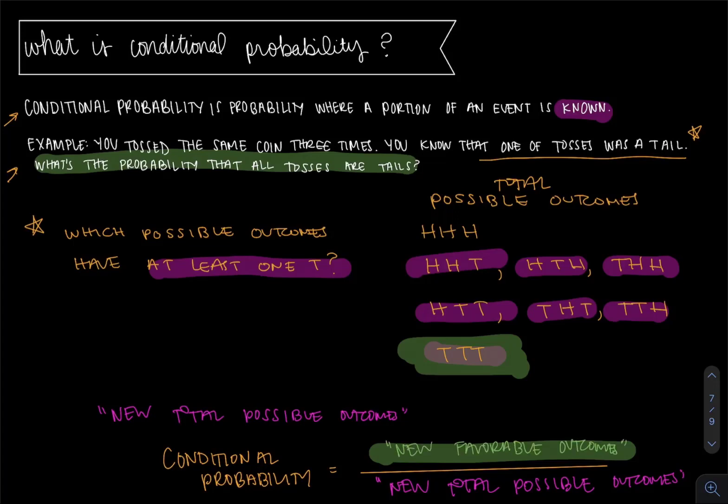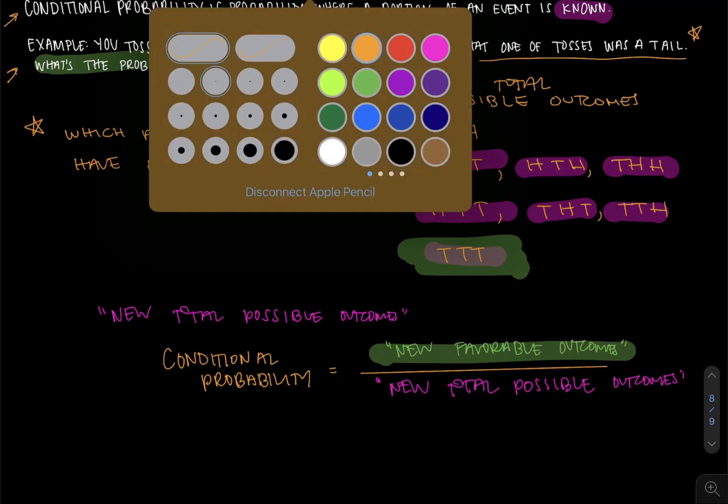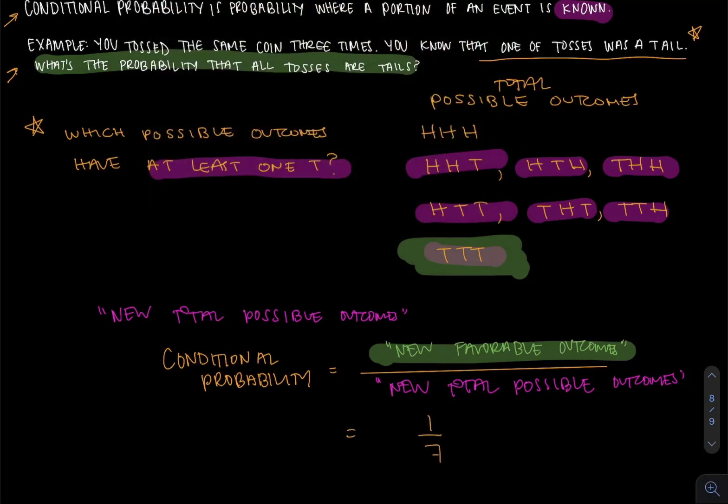Again, for conditional probability, the numerator is just the values that answer the question. Your denominator is usually shrunk down or reduced by your known information. So in this case, our conditional probability is going to be one out of seven. But if you look at the total possible outcomes in general before that known information, it would have been one out of eight.